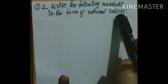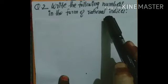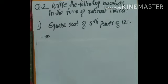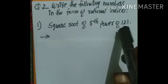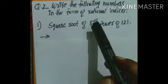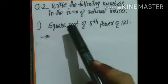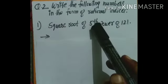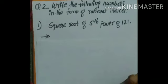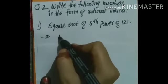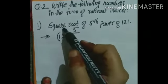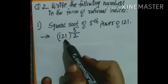Question Number 2: Write the following numbers in the form of rational indices. Rational indices means the index should be in fraction form. The first question is: square root of the fifth power of 121. Here 121 is the base number. The power 5 is the numerator and the square root means the denominator is 2. So we write: 121 raised to 5 upon 2.